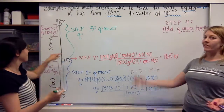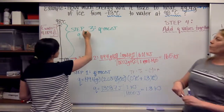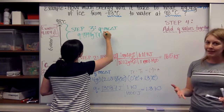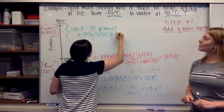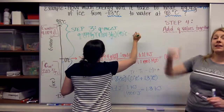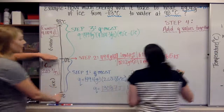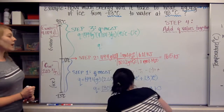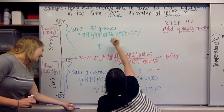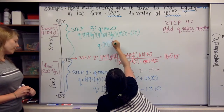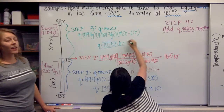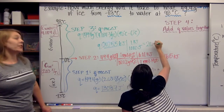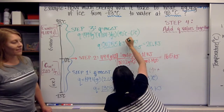Step three: now that we're not at the phase change, we can use Q equals mcΔT again since the temperature is changing. We have our mass again — 49.4 grams, still hasn't changed — and we use the specific heat of water, which is 4.184 J/g·°C. T final is 98 degrees and T initial is zero — not negative 13, since we're talking about just this step. So 98 minus zero gives us Q equal to 20,255.6 joules, which we convert to kilojoules.